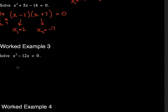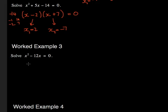This one is slightly different, but not really too much. What I can see here straight away, x is in both terms. So I could just say that is x times x minus 12, which equals 0.